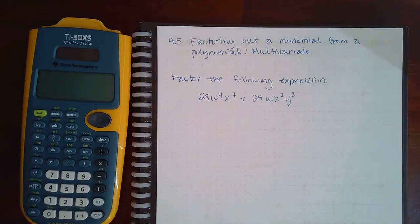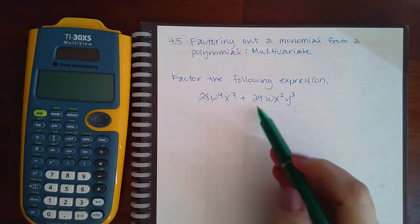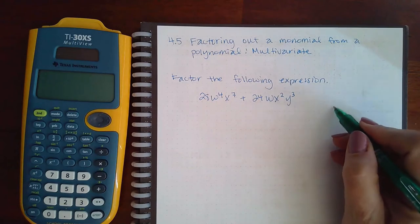Here we have 4.5 factoring out a monomial from a polynomial multivariant. So between 28 and 24, I'm going to do the smaller number.